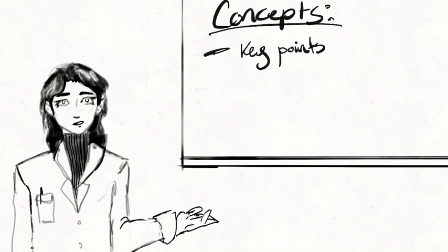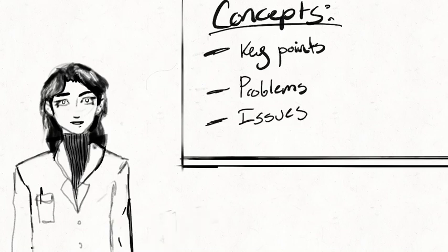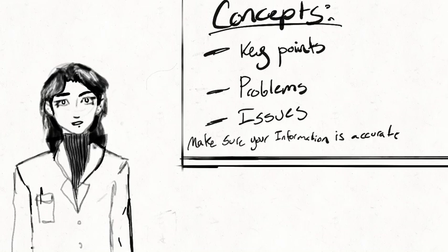Another key component of your research project will be your concepts. Here you will explore the key points, problems, and issues related to your research subject. This may include the different types of dating that can be done on wood samples and the pros and cons of each. Make sure that your information is accurate and complete for your level of knowledge and understanding.